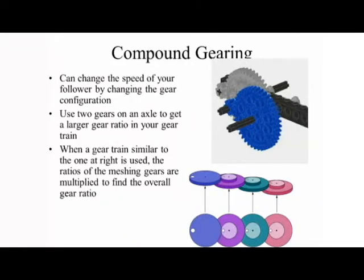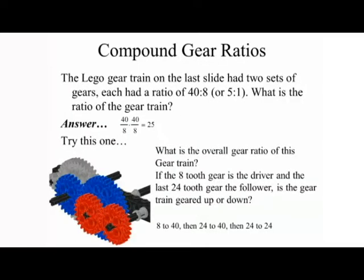Compound gearing can change the speed of your follower by changing the gear configuration. Use two gears on the same axle to get a larger gear ratio in your gear train. When a compound gear train is used, the ratios of meshing gears are multiplied to find the overall gear ratio. For example, a Lego gear train with two sets of gears each having a ratio of 40 to 8, or 5 to 1 — the overall ratio is 40/8 × 40/8 = 25.